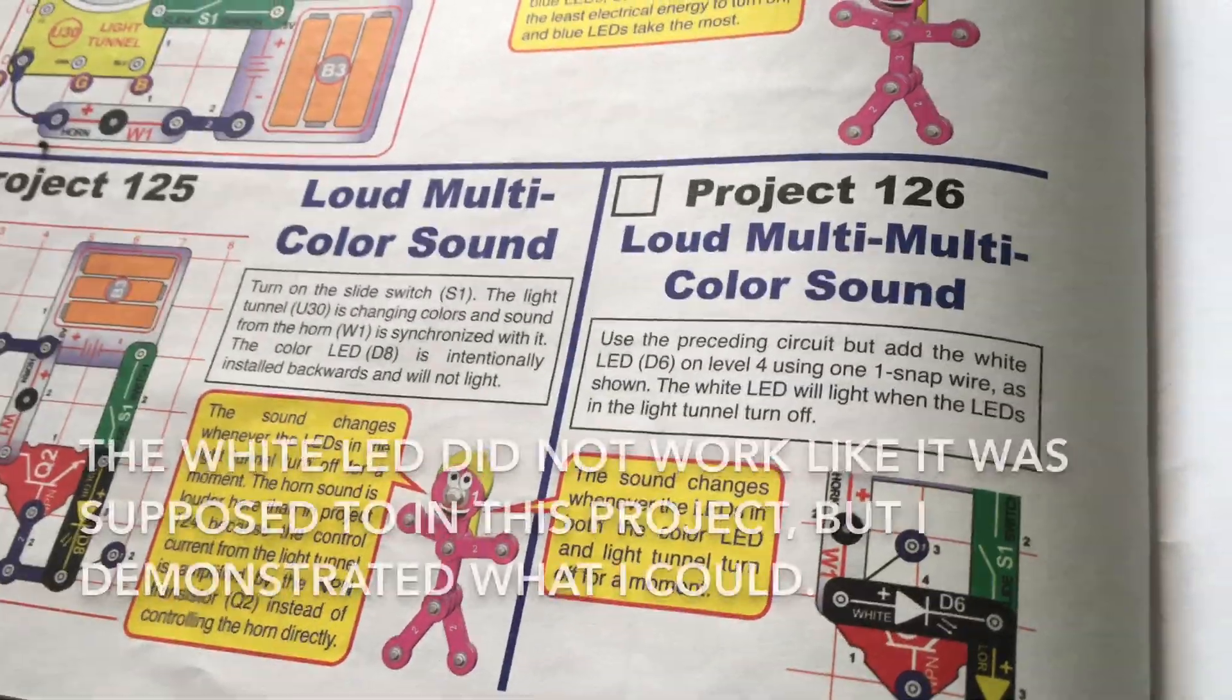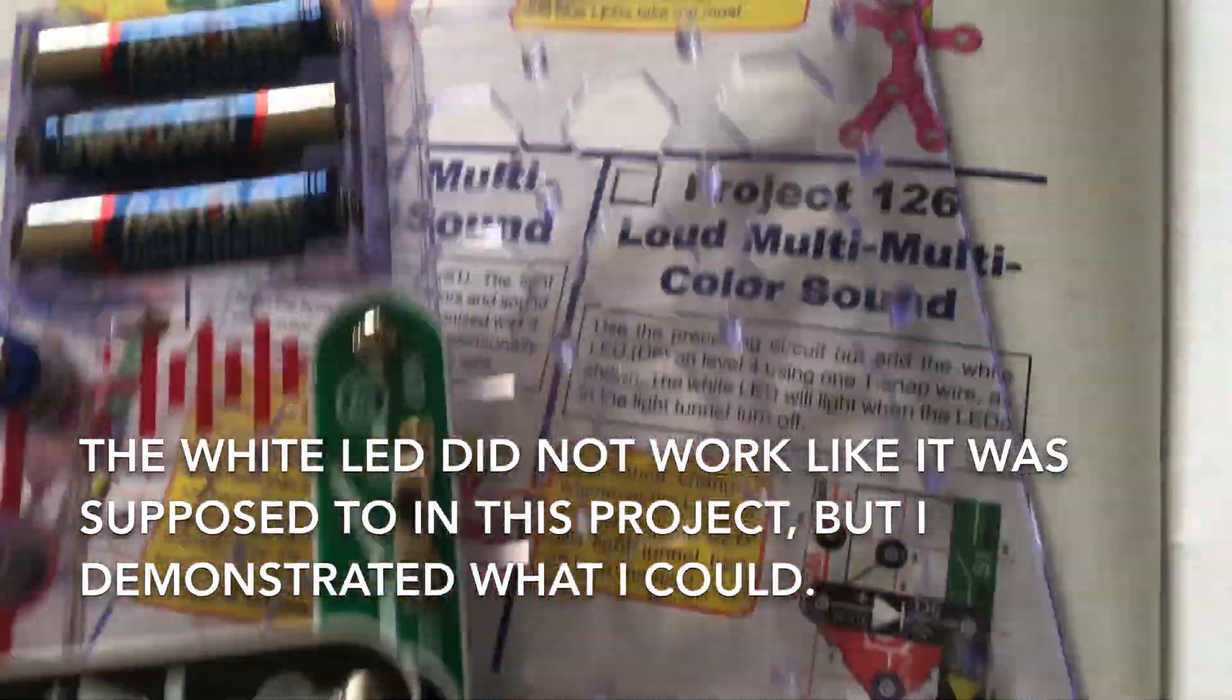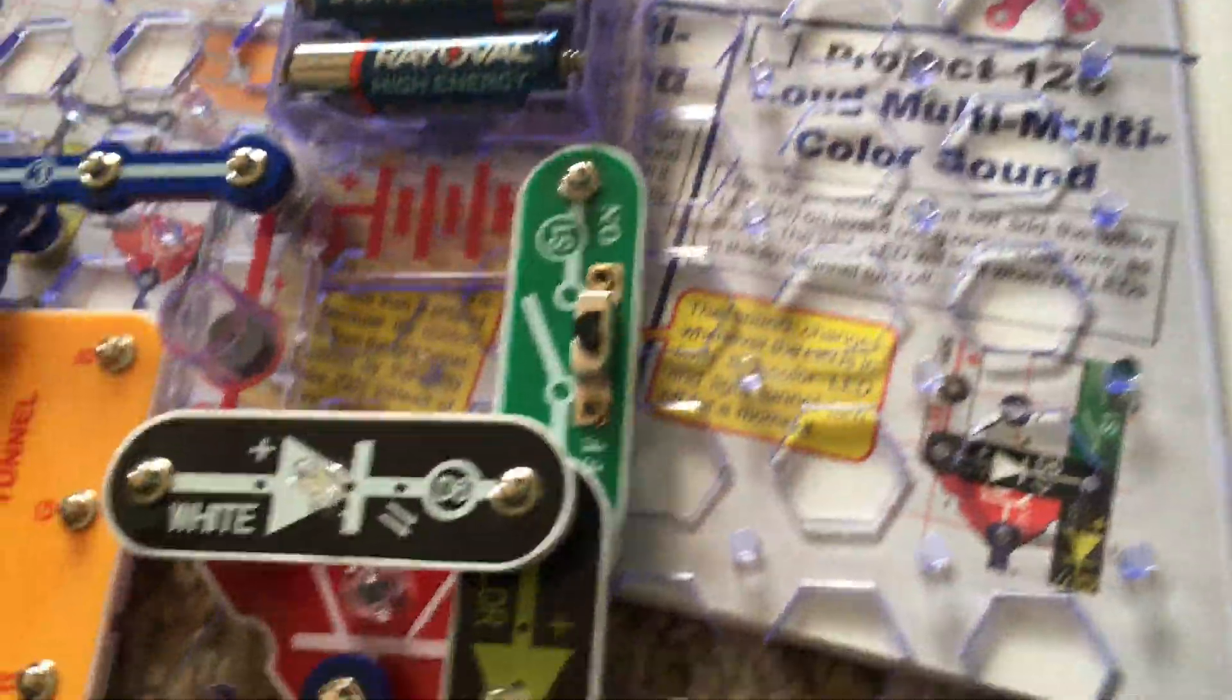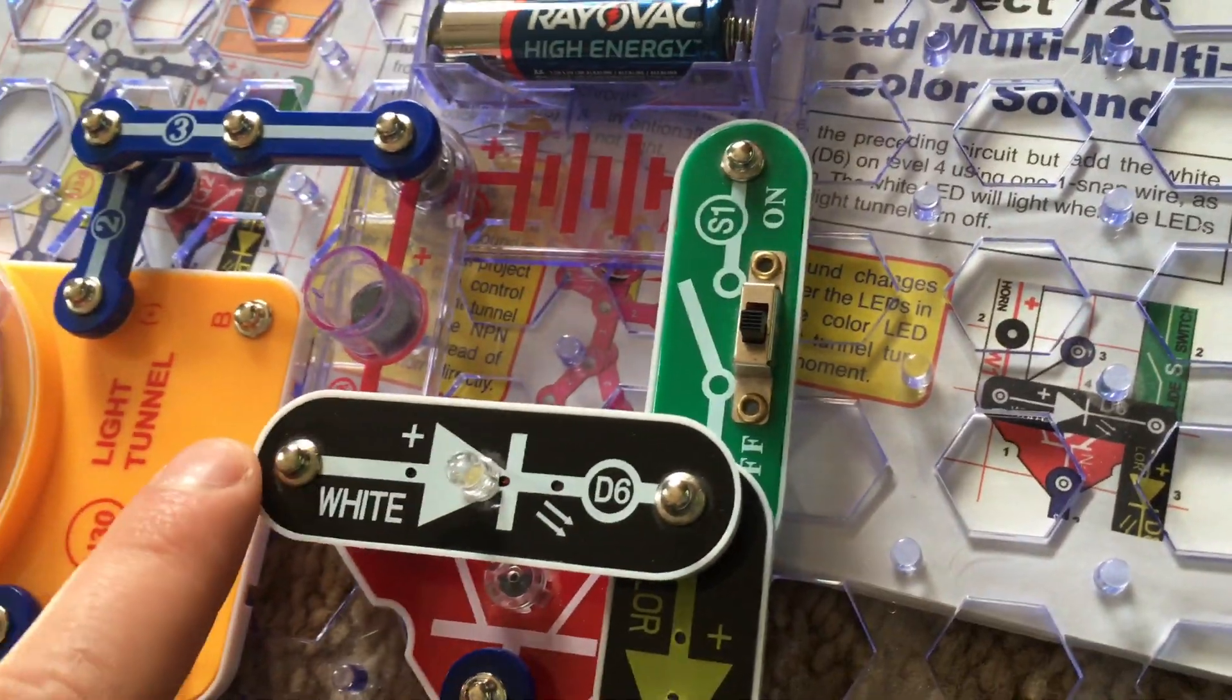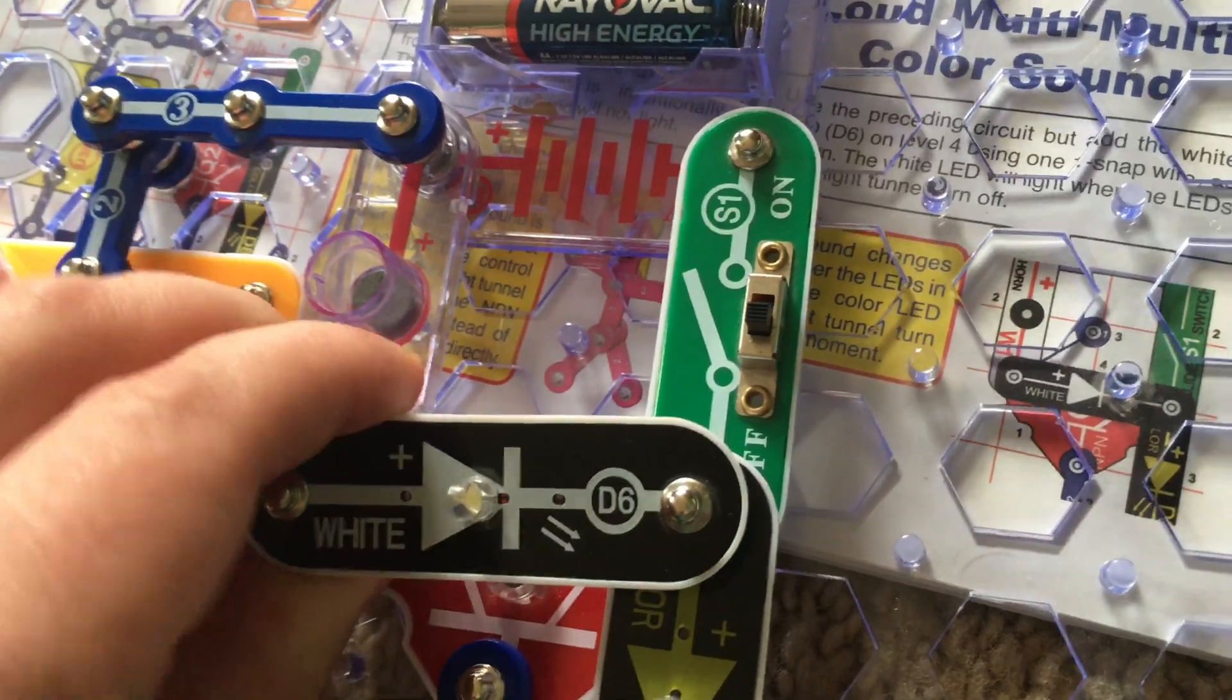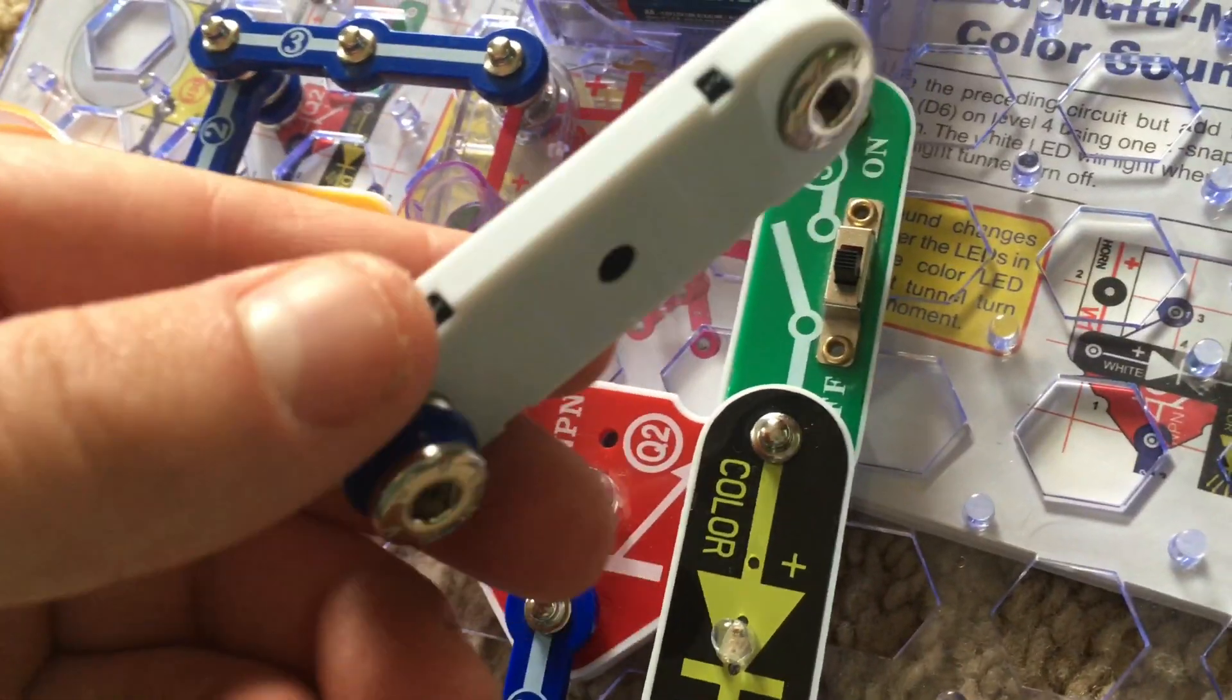For project 126, loud multi-color sound, I was not able to really get this project to work but the basic principle would be to place the white LED on level four of the circuit using a one-snap wire.